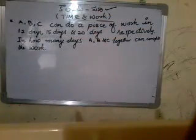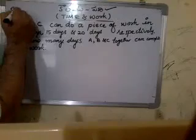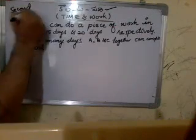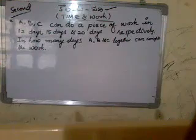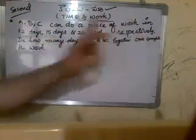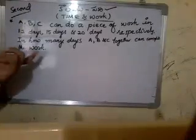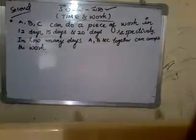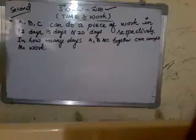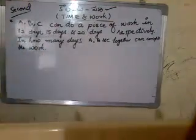We will show you how to do a piece of work where A can complete it in 12 days, B in 15 days, and C in 20 days. In how many days can A, B, and C together complete the work?